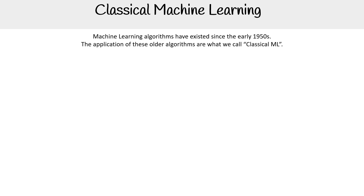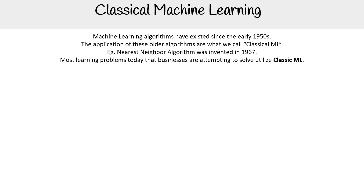They're called classical ML because we are dealing with older algorithms. One example would be the nearest neighbor algorithm, which was invented in 1967. And lots of companies today could definitely utilize classical machine learning to solve business problems — just because they're old does not mean that they're not good. It's just a matter of organizations knowing how to adopt classical machine learning.